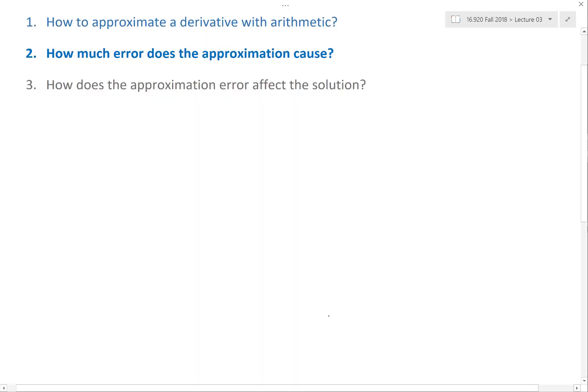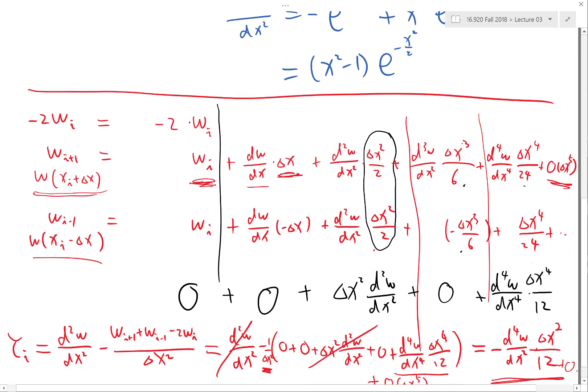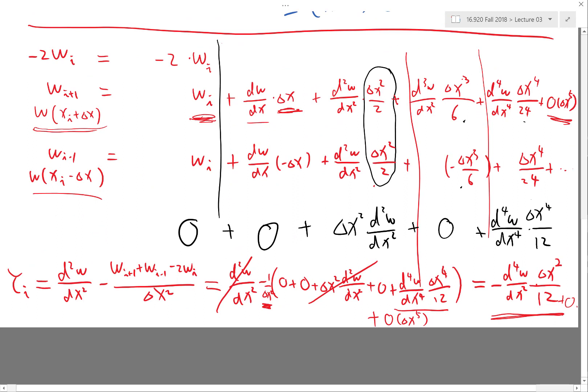So going back to the analysis of the truncation error, right? So again that's the truncation error. The truncation error is proportional to the fourth order derivative of the function W. Fourth order derivative.